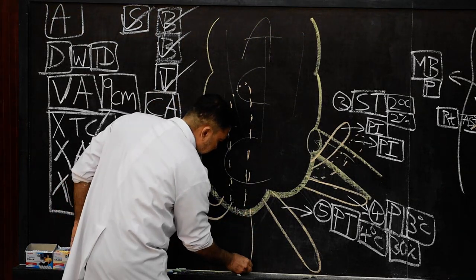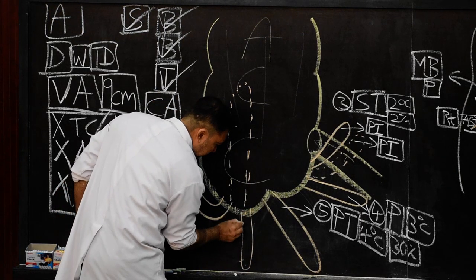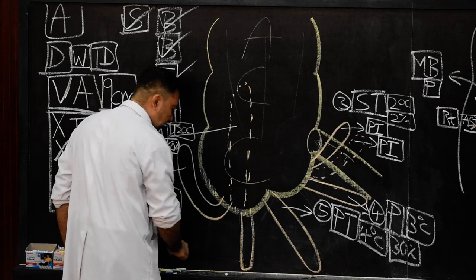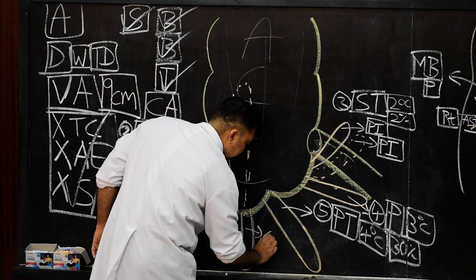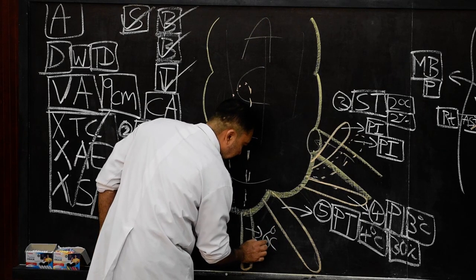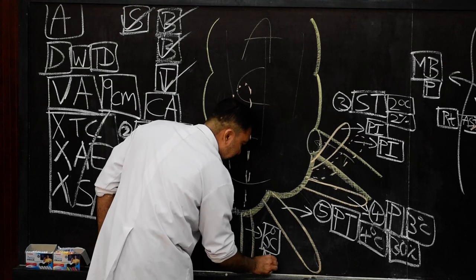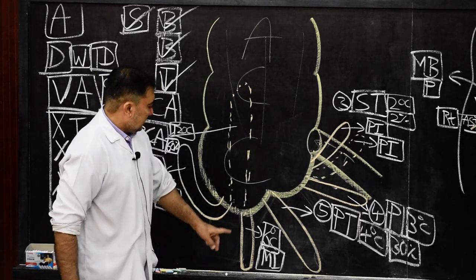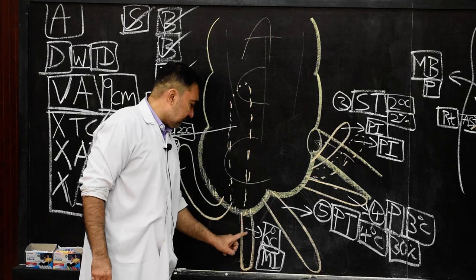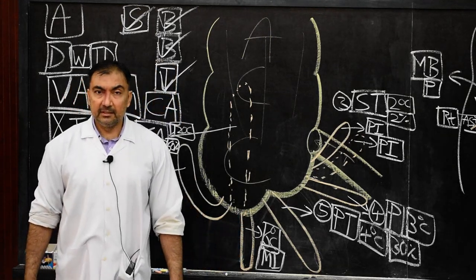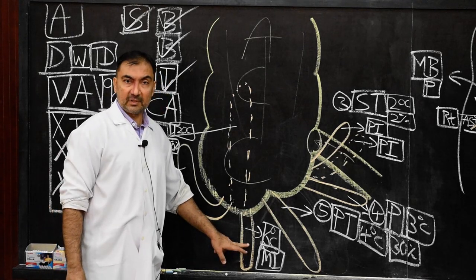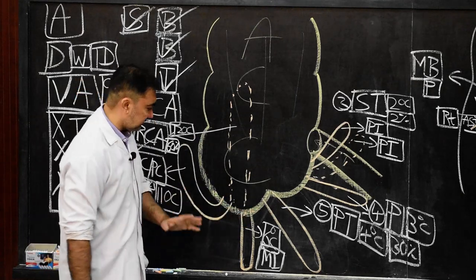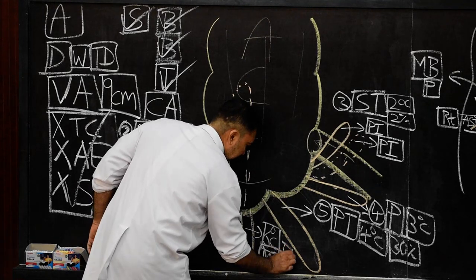The last classification: the tip is directed vertically downwards — this is the six o'clock position, known as the mid-inguinal type of appendix. Again, this mid-inguinal or six o'clock position, where the appendix is directed vertically downwards, is a rare condition. This is classification number six.